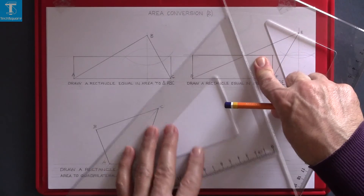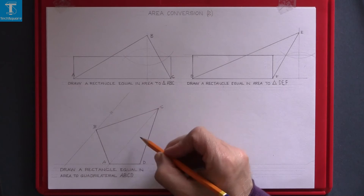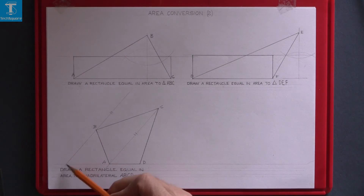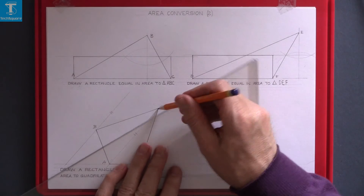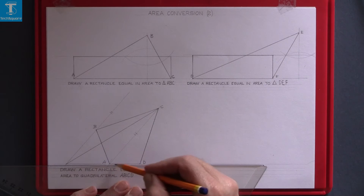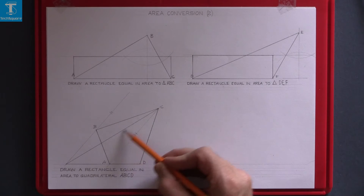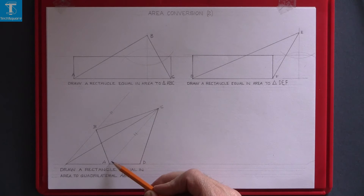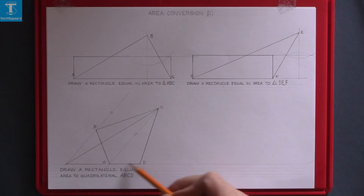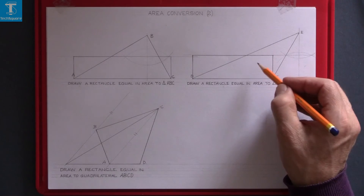And then draw parallel to that line through B. Those two lines are parallel. From C join down to that point. Extend the base. And now this triangle here is equal in area to this triangle. Therefore this triangle is equal in area to quadrilateral ABCD.